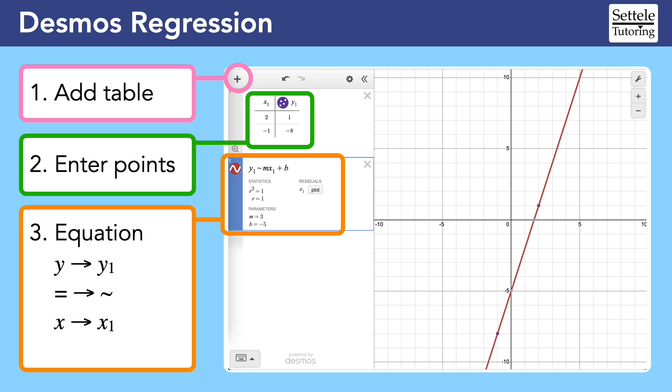There are no special buttons to press. Just type the letter y followed by the number one and Desmos will automatically create a subscript. The same is true of the x. We also need to use a tilde squiggly line in place of the equal sign.